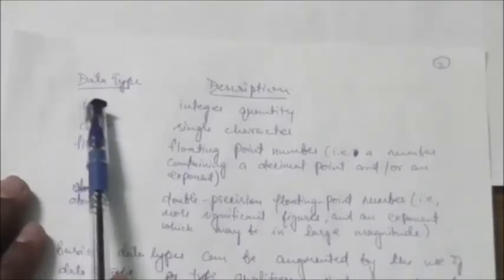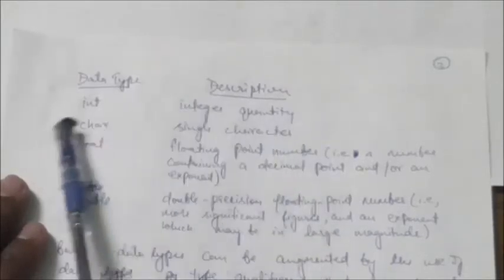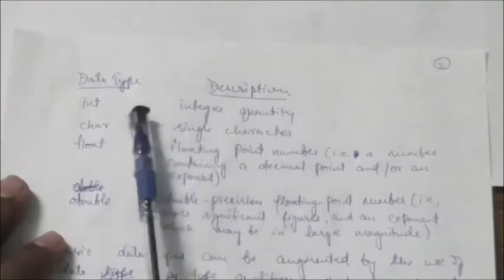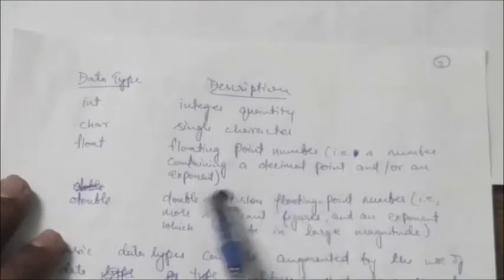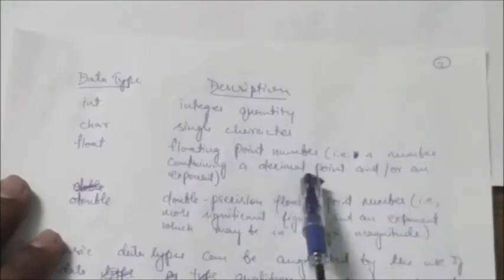First data type is int, meaning integer quantity. Second is char, meaning a single character. Third is float, meaning floating point numbers - those numbers which contain a decimal point, like 10.23.